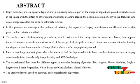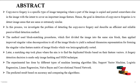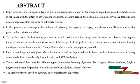The abstract of the project: Copy Move Forgery is a specific type of image tampering where a part of the image is copied and pasted somewhere else in the image with the intent to cover an important image feature. Hence, the goal in detection of Copy Move Forgery is to detect image areas that are the same or extremely similar.